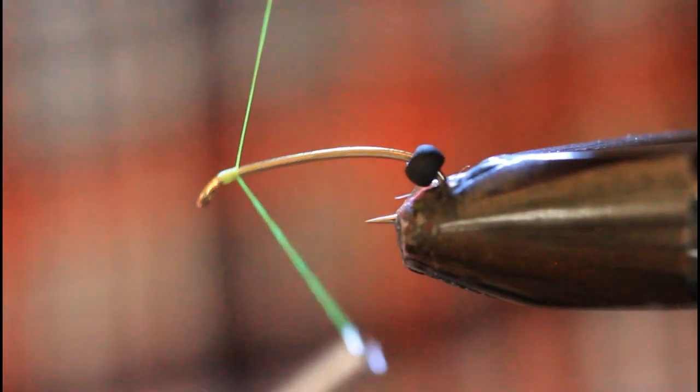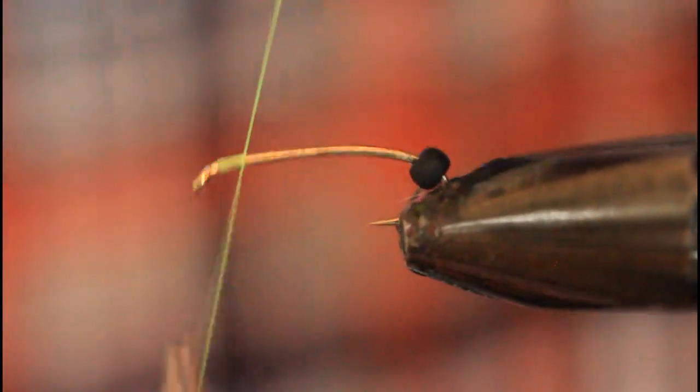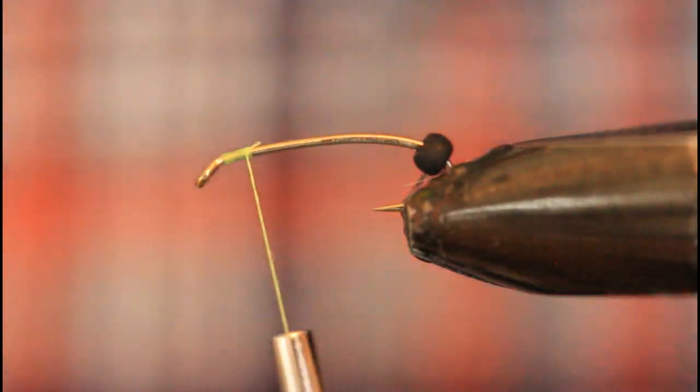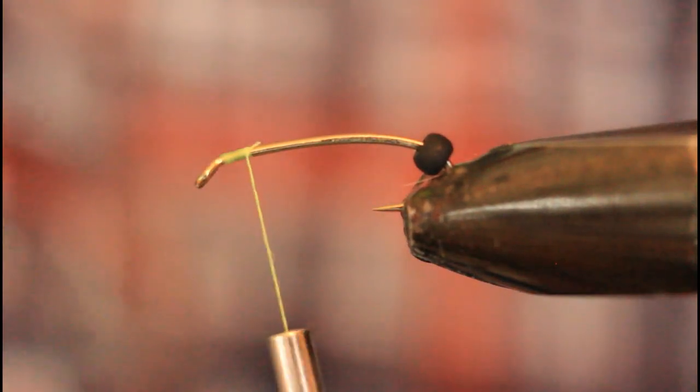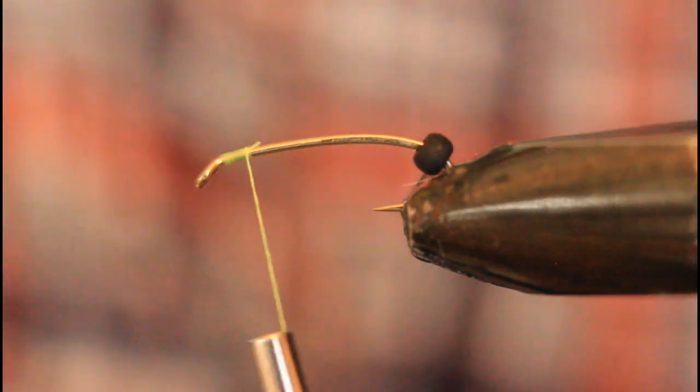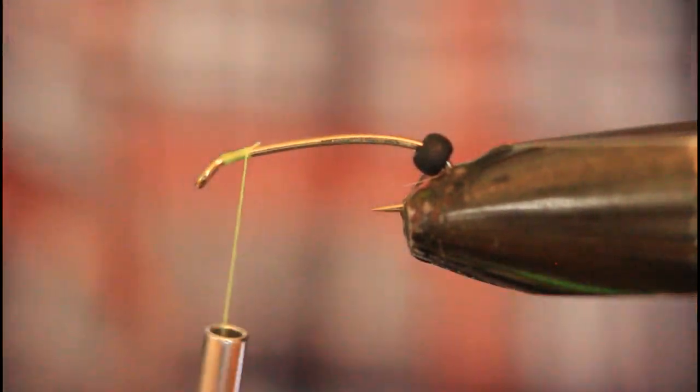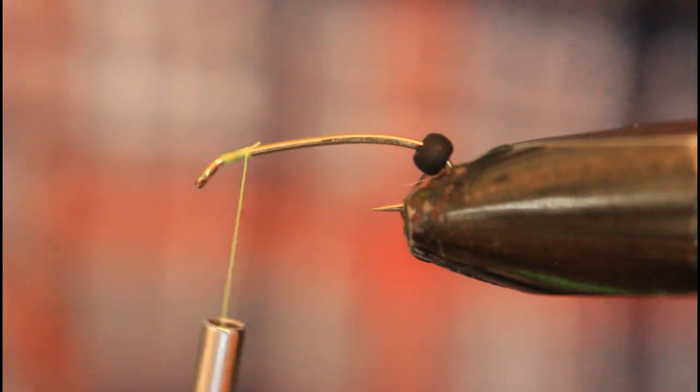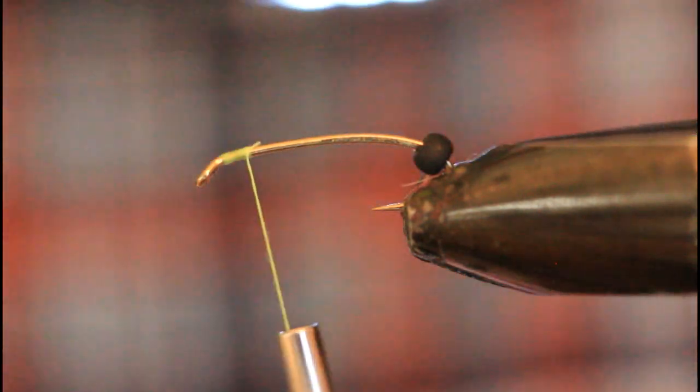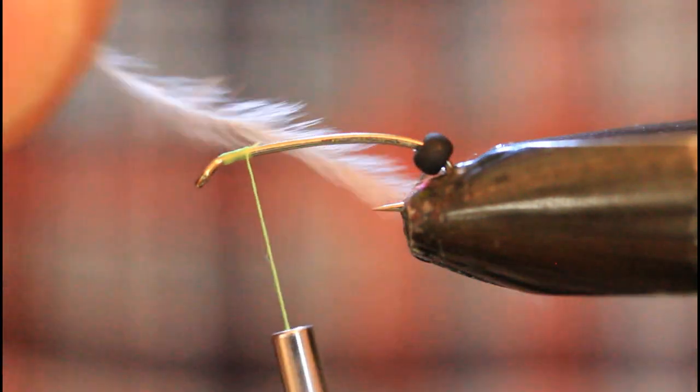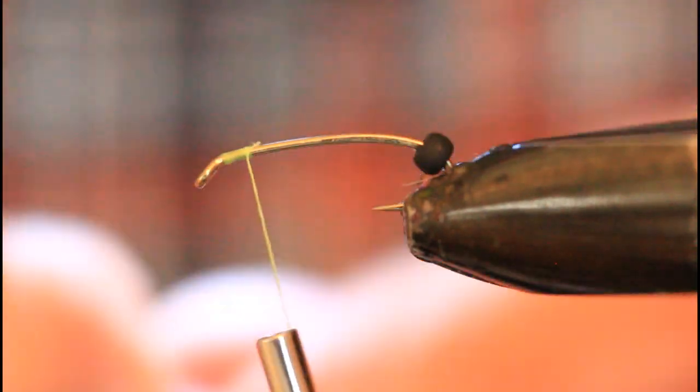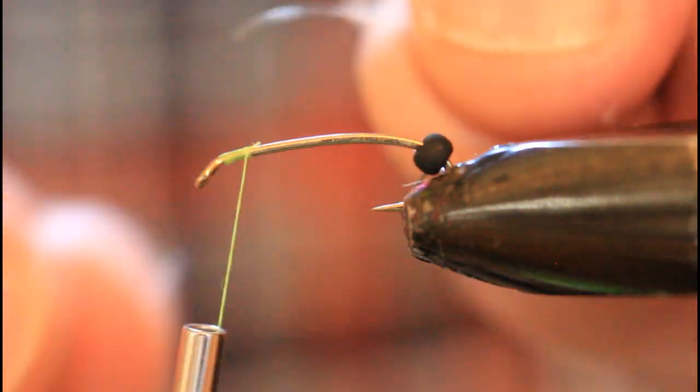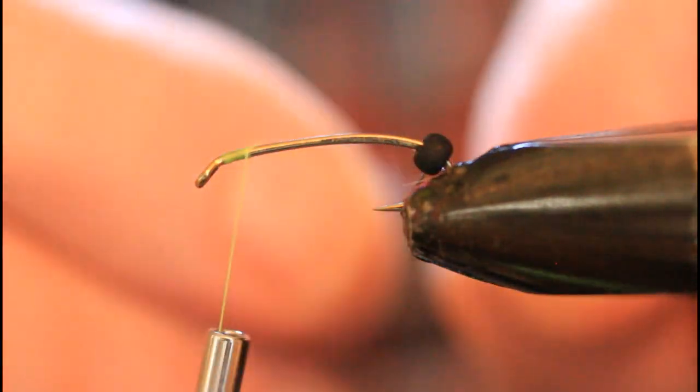And get a little set of wraps here at the head for tying in our gills. And again, I'm going with ostrich hurl on the gills. I really like the way ostrich hurl finishes on flies. It's very easy to use and you don't have to trim it once you've got it. So take a single strand of white ostrich hurl and strip the fibers off the butt end of it so that I can tie it in.